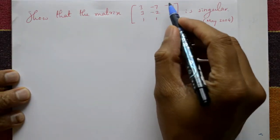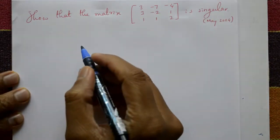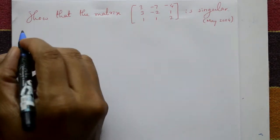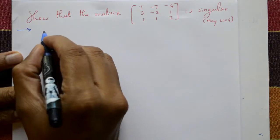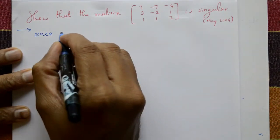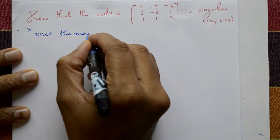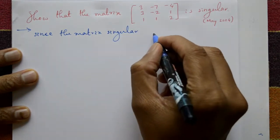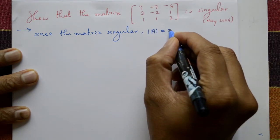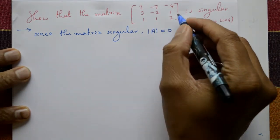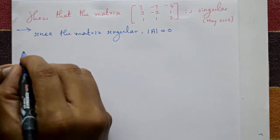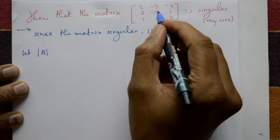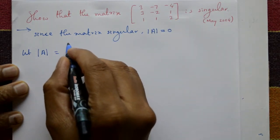Show that the given matrix is singular. To prove that the given matrix is singular, we need to show that the determinant of A is equal to 0. Let A be the given matrix and take its determinant.